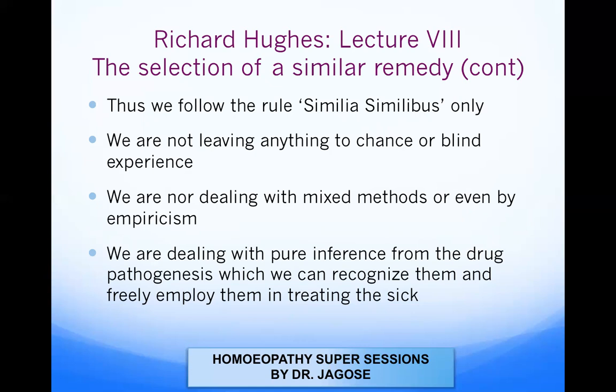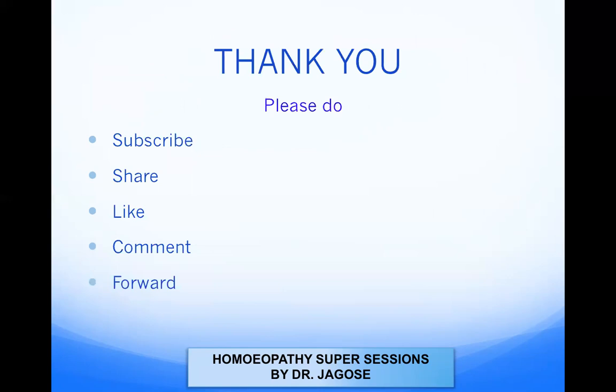We are dealing with pure inference from drug pathogenesis — symptoms proven on healthy human beings, which are noted down as true, pure, genuine symptoms. When a sick person comes, we take the totality of symptoms and see which drug fits completely into the disease according to the rule similia similibus.